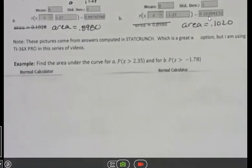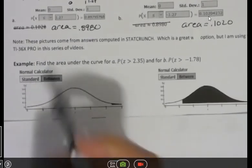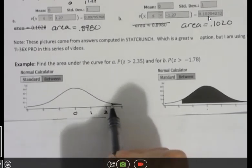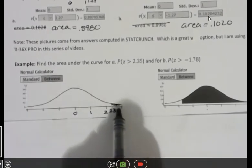So if I was to draw that picture, it would look like this. Here's 0. Here's 1. Here's 2. And over here is 2.35. It's to the right of 2, quite a ways over. So we have a very small area that we're asking about here for area under the curve.